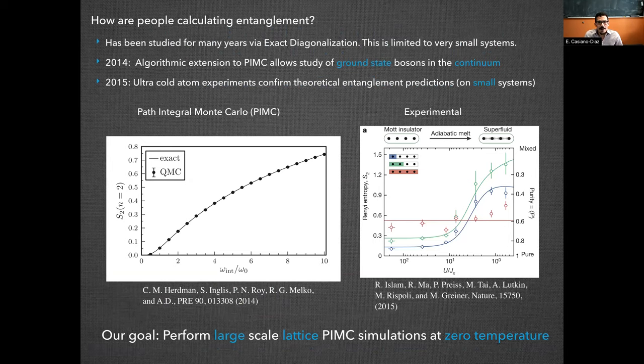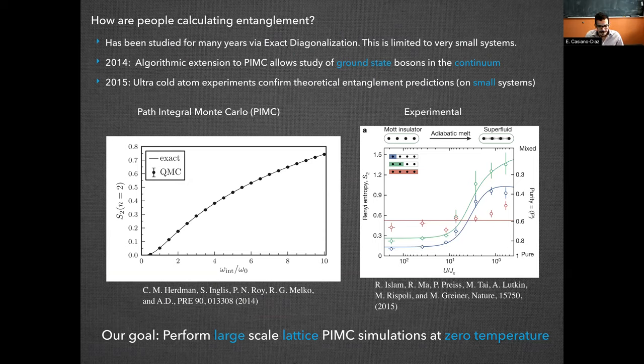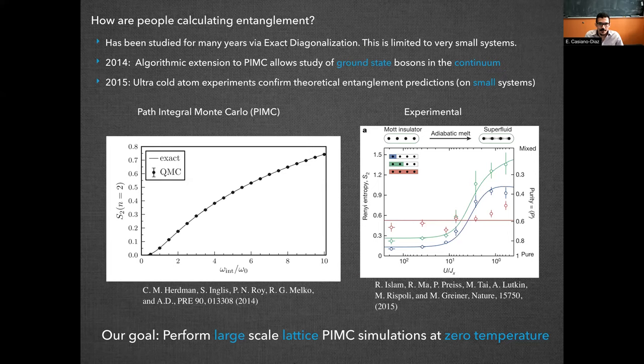Before we talk about our approach on how to calculate entanglement entropies, I would like to mention some of the other methods that have been around for a while. First of all, entanglement entropies have been calculated for many years via exact diagonalization. The problem is that this method is limited to very small systems and in fact if we could just do this for a larger system, we would not even be pursuing what we are doing with this project.